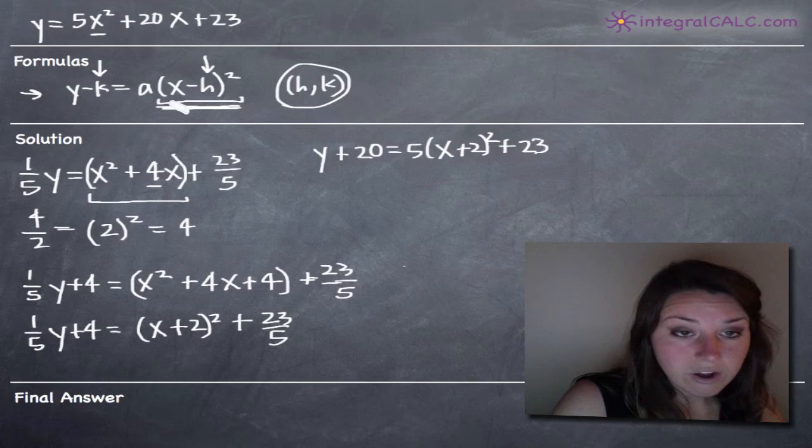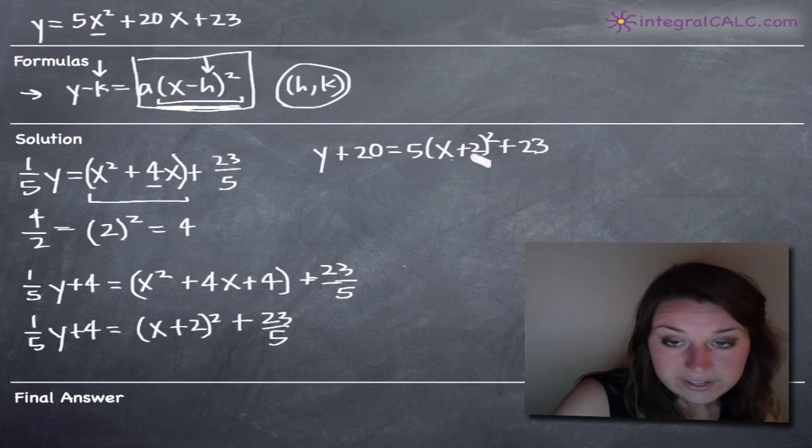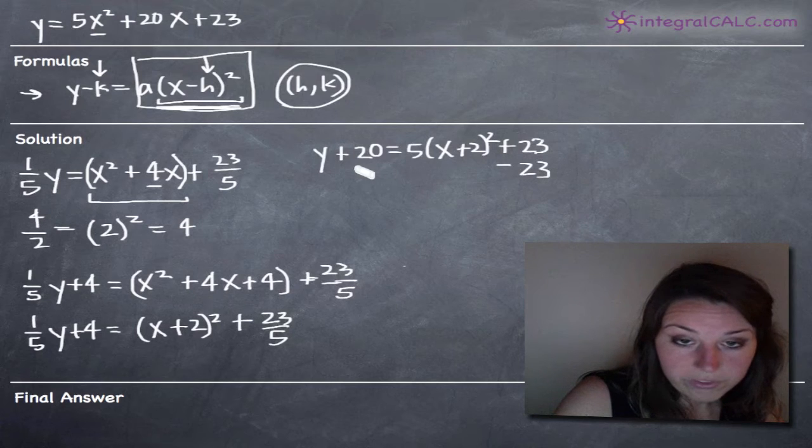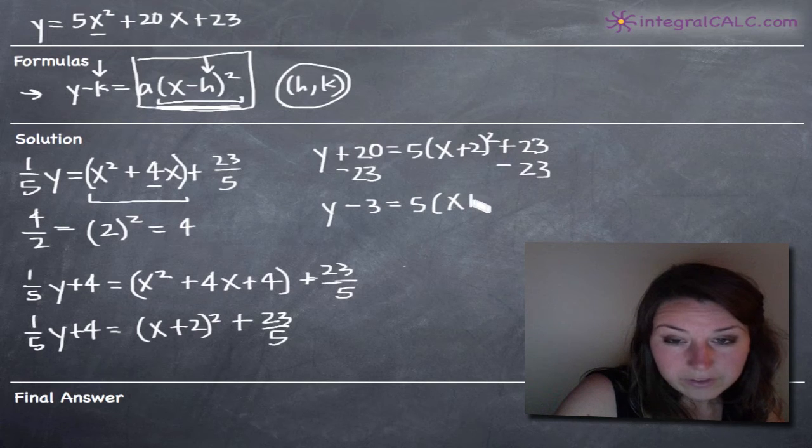Notice that in our formula, we don't have any constants on the right-hand side of our equation here. So we're going to need to move all constants to the left-hand side and we'll do that by subtracting 23 from both sides. So when we subtract 23 from both sides, we'll get y minus 3 equals 5 times x plus 2 squared.